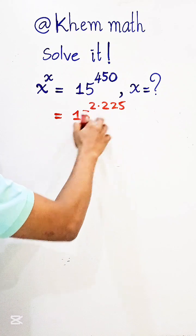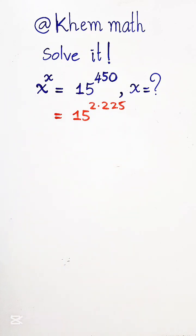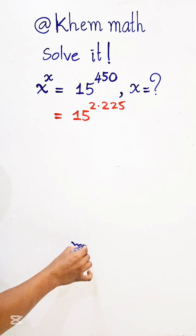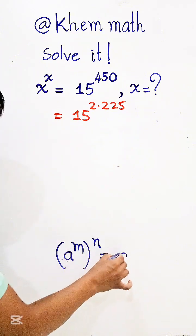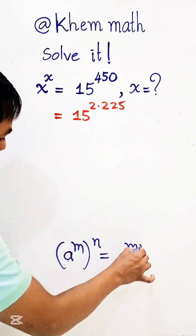And here we use the formula. We see a power m all power n equal a power m times n.